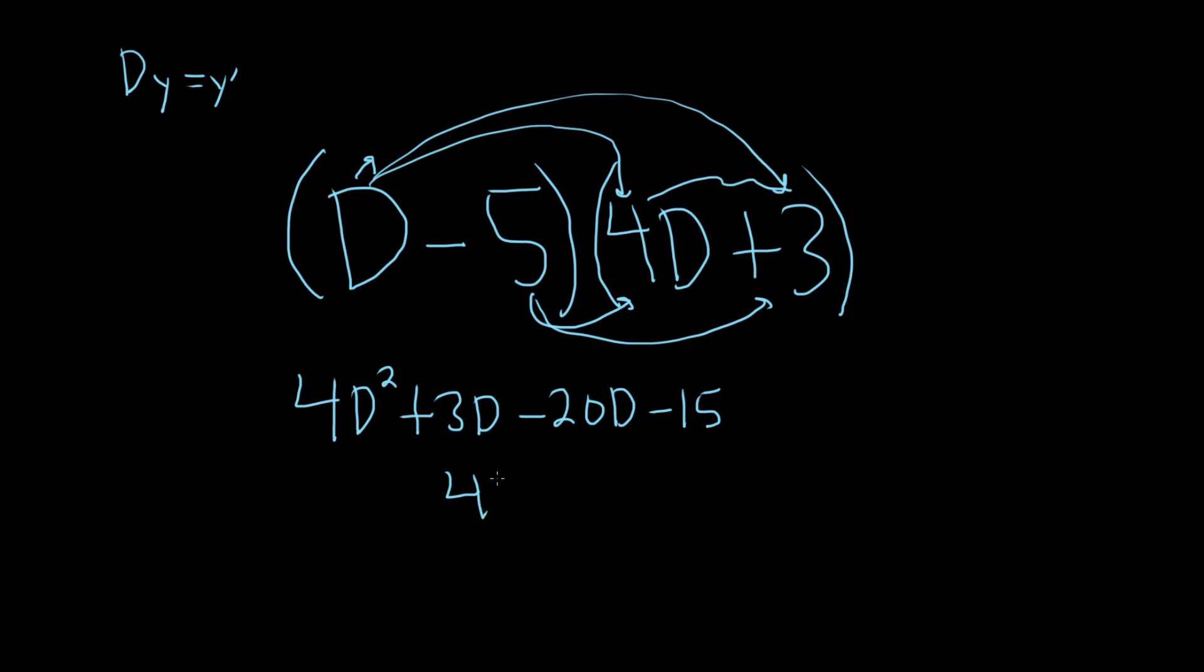So you end up with 4D squared minus 17D minus 15.